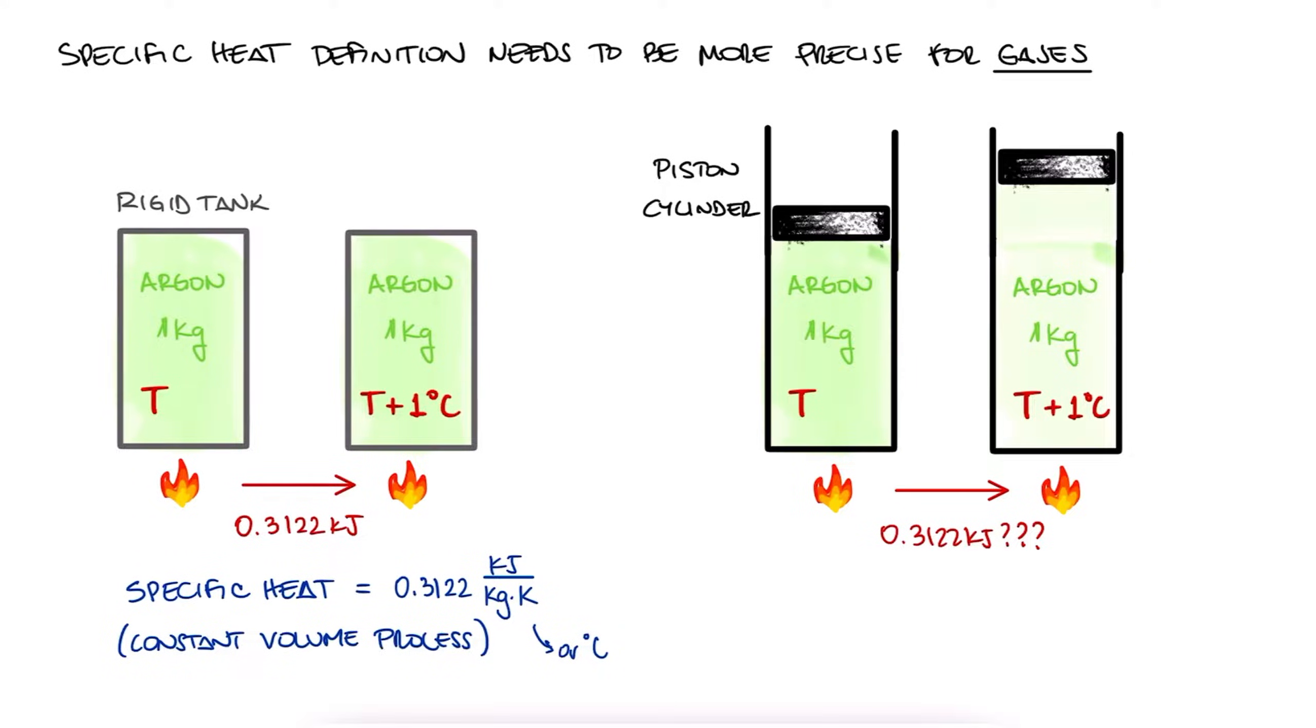Well, we already know that in a constant pressure system like this, part of the heat we add will go towards the work generated by the expansion of the gas. Only part of the heat we add will actually go into increasing the temperature of the gas. Therefore, we would expect this heat value to have to be more than that required to increase the temperature inside a rigid tank.